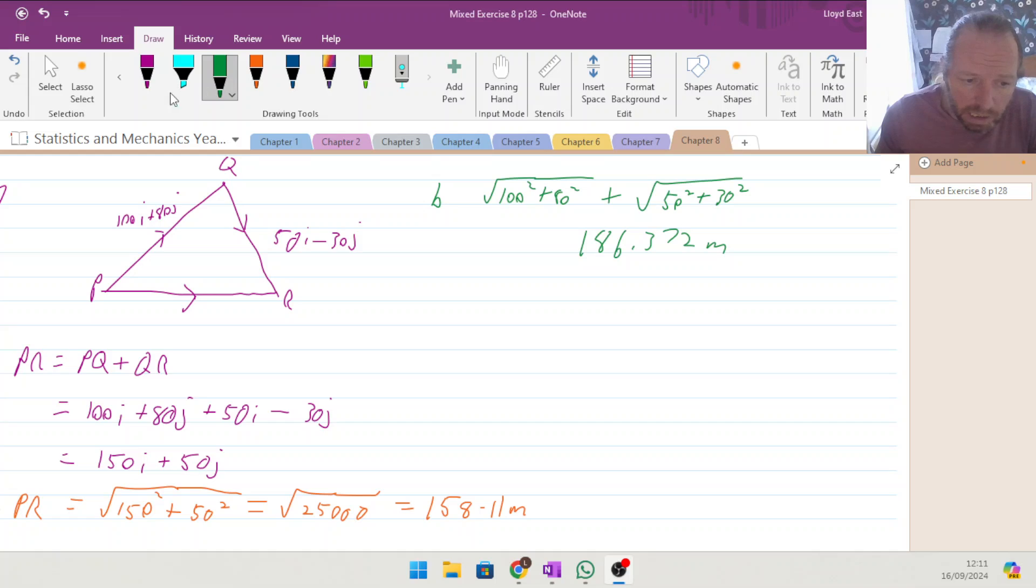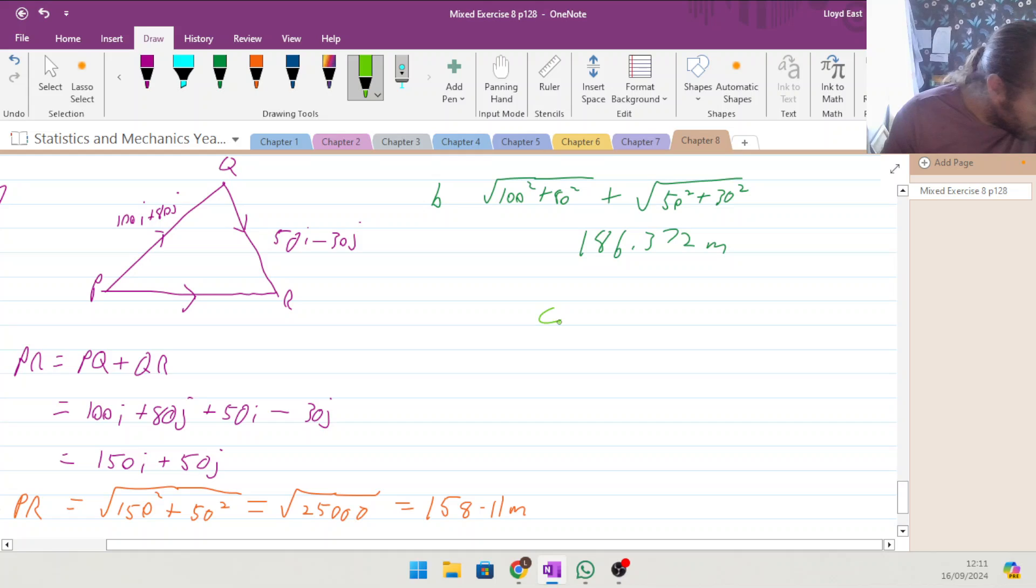And now finally, let's go and find, for part C, they want to find the angle the vector PQ makes with the unit vector J. So J is the vertical here, and the unit vector is only one long, so we are looking for this angle in here, so as we come across 100 on the I, and 80 on the J, we are looking for the angle here.